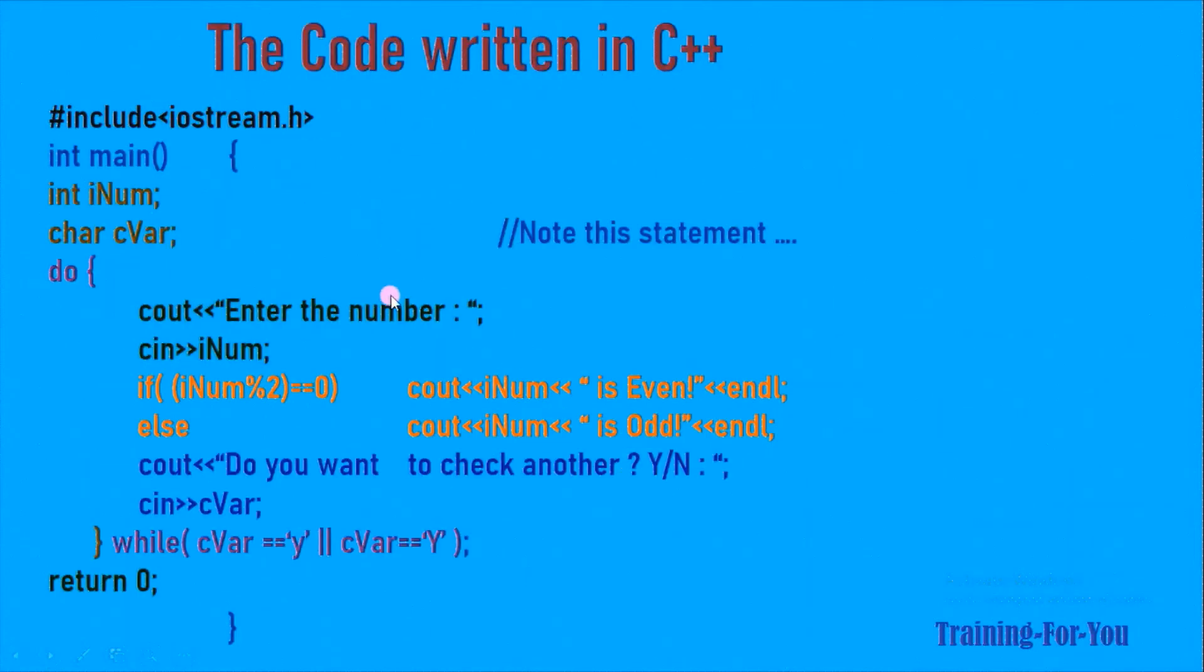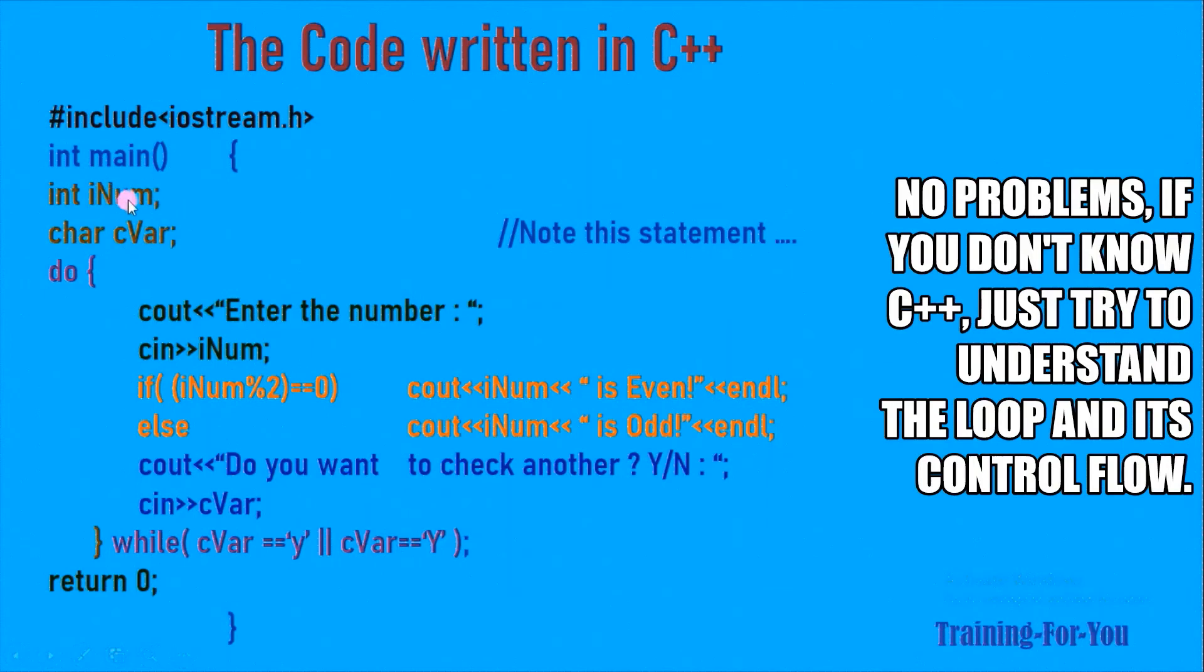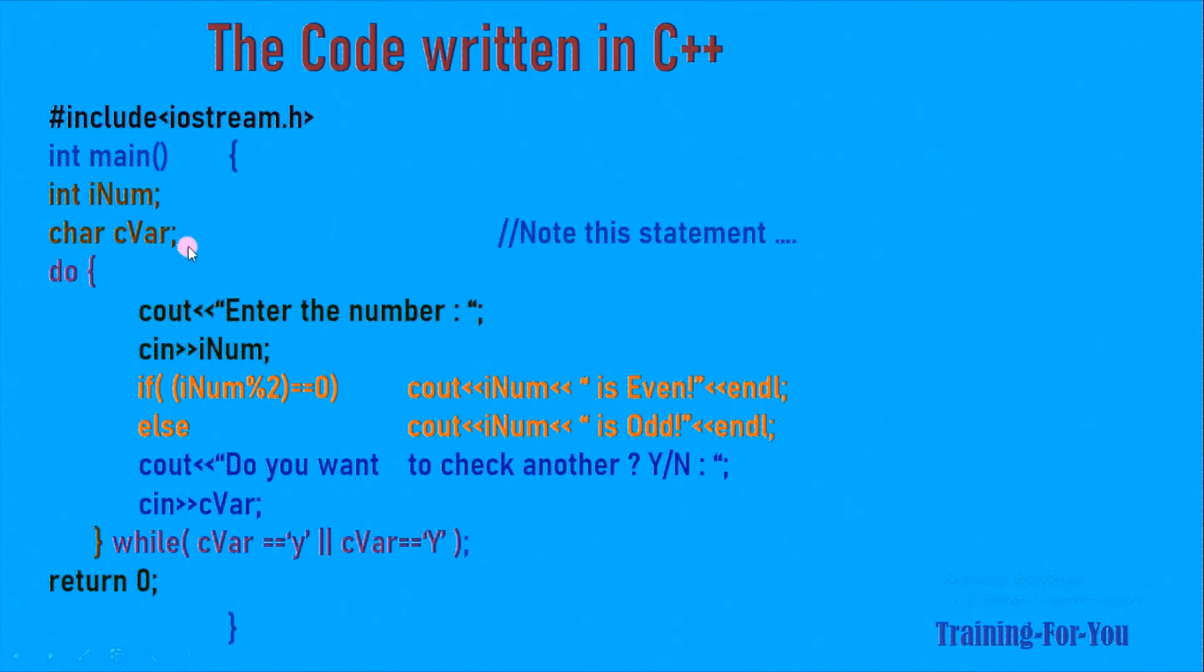So again let's look at the C++ code. Here again we have taken two variables, one for accepting the number and one for controlling the loop. But see here we have not initialized the variable to make the condition true at the beginning. It's not required because there is no condition at the beginning.